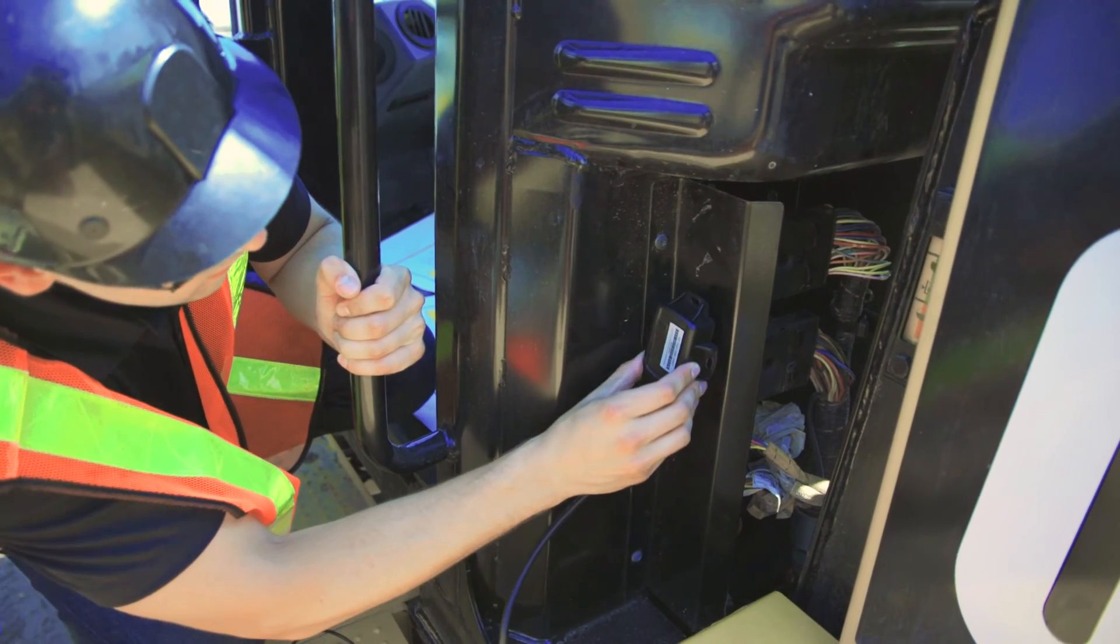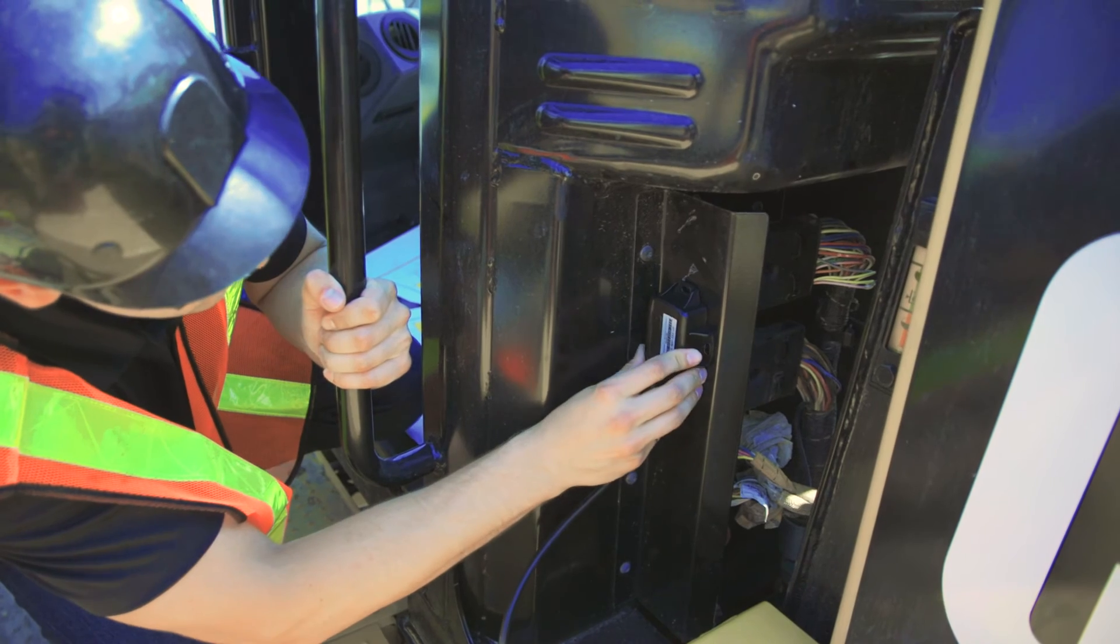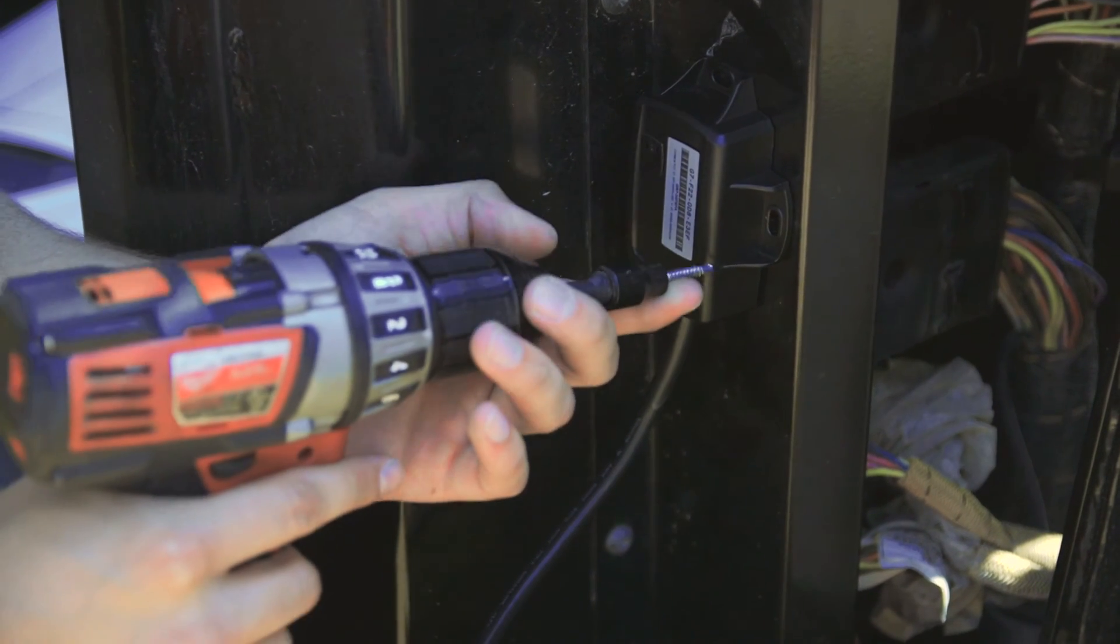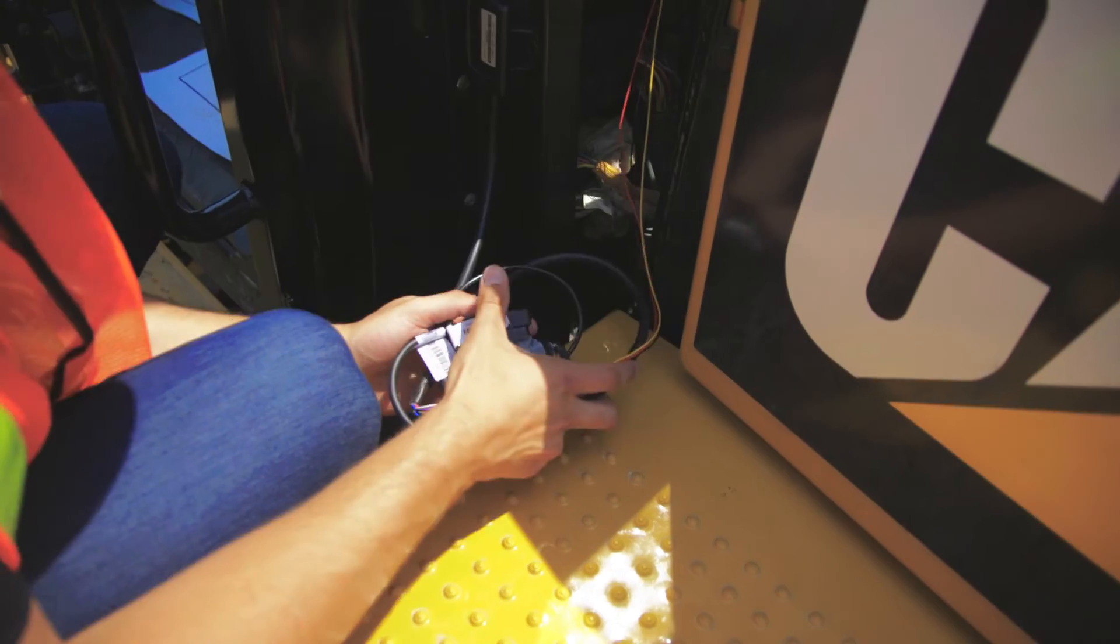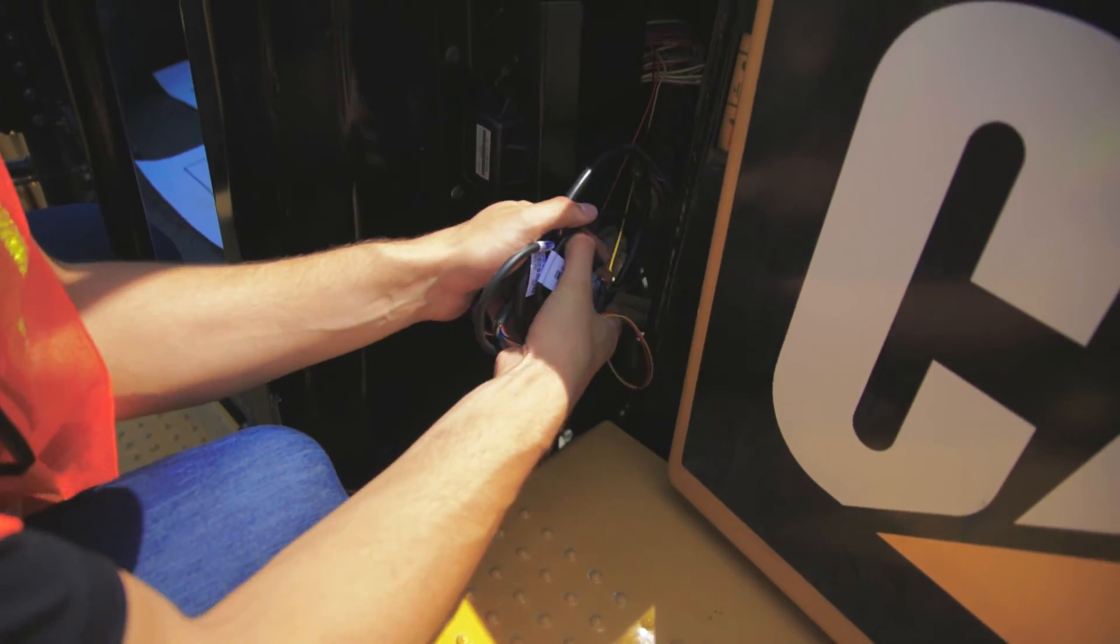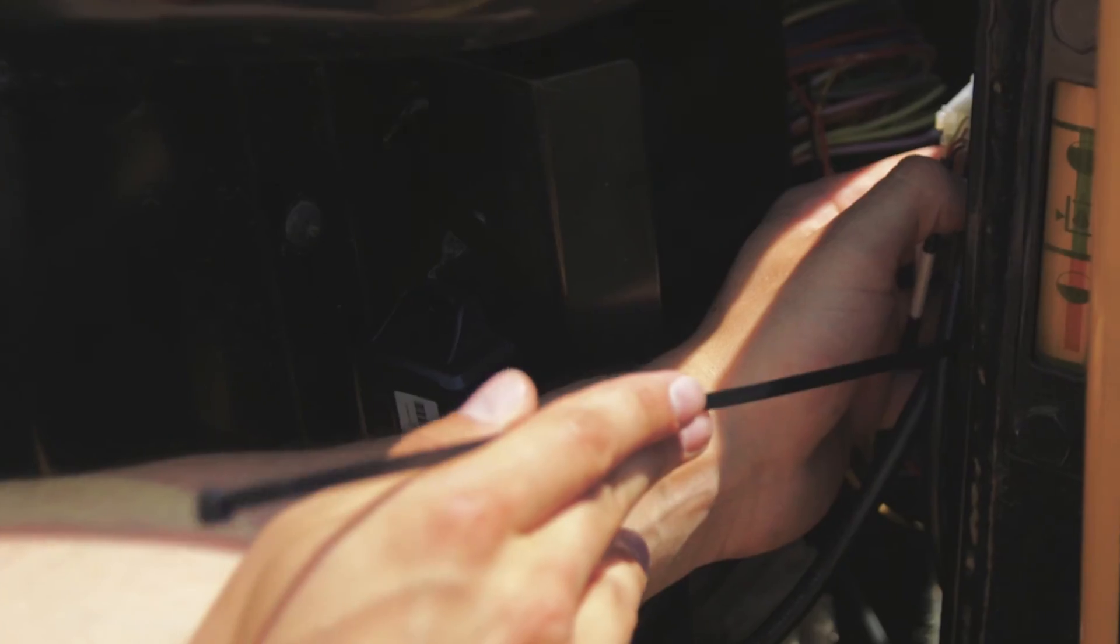Secure the device using screws provided at the desired location previously noted. To ensure the quality of data, the device must not have any movement. Zip tie the wires to a permanent location in the vehicle meeting all safety requirements.